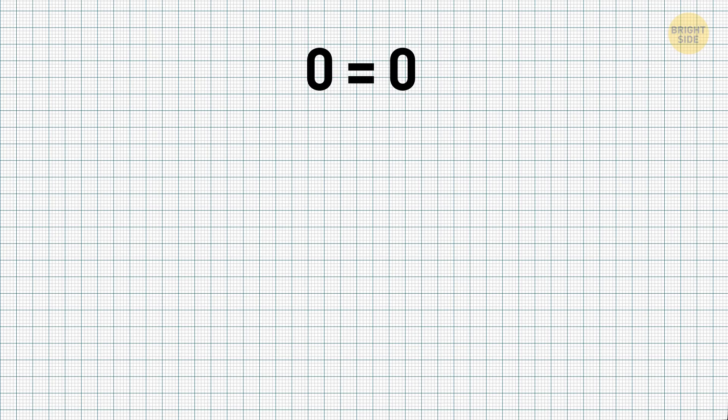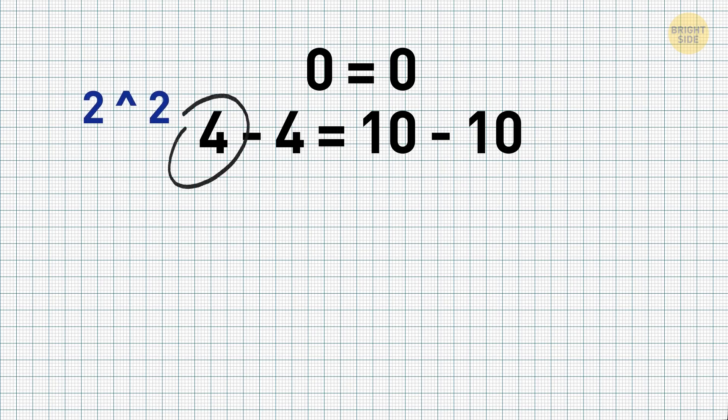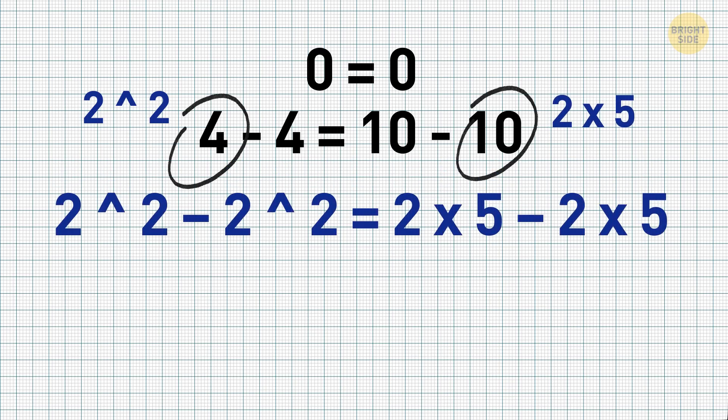Now, 0 can be a result of subtracting a number from itself. Let's take numbers 4 and 10 for our case. And we'll have this equation: 4 minus 4 equals 10 minus 10. Taking it one step further, 4 can be written as 2 to the power of 2, and 10 can be written as 2 times 5. In the end, we get this equation: 2 to the power of 2 minus 2 to the power of 2 equals 2 times 5 minus 2 times 5.